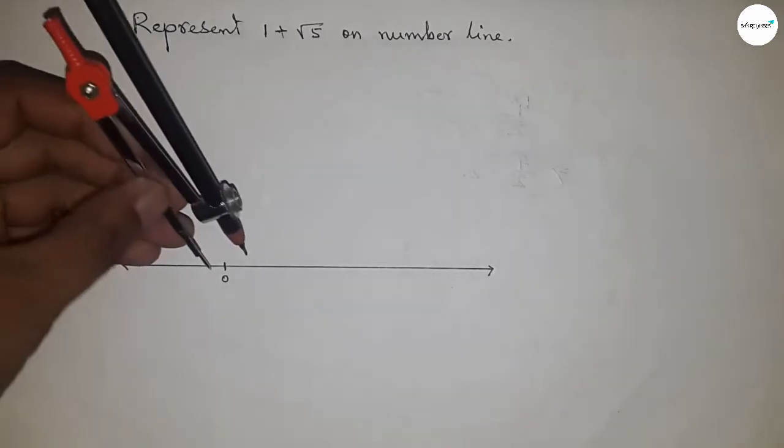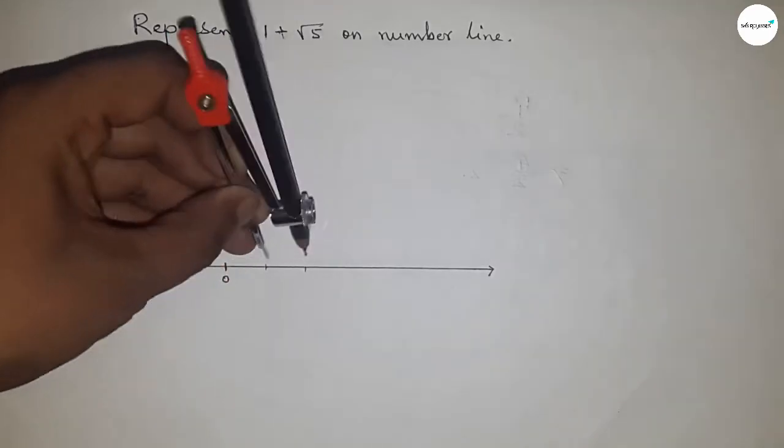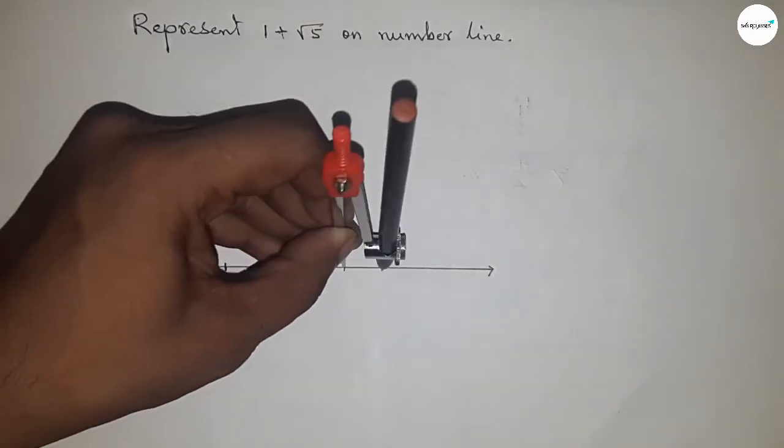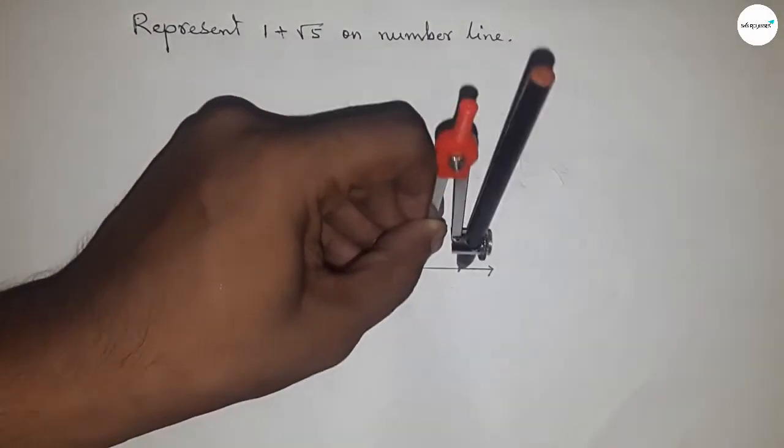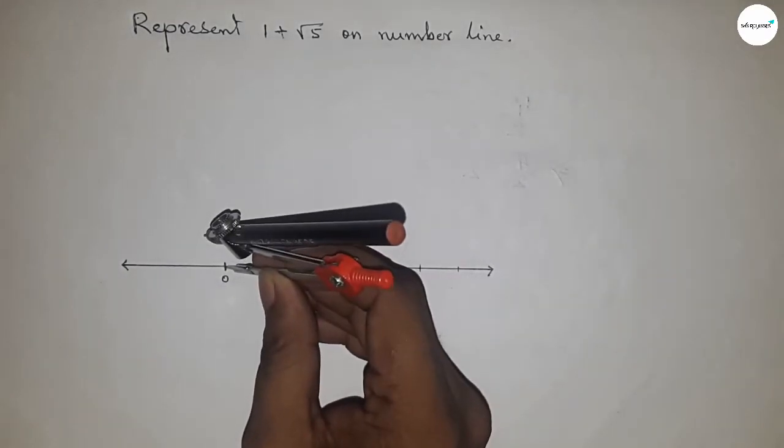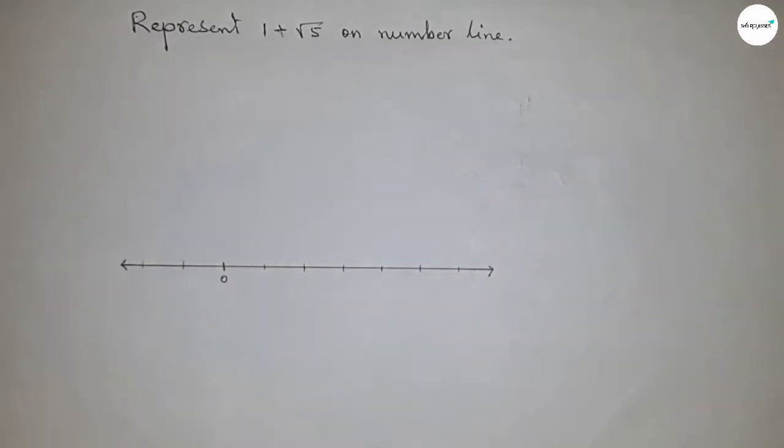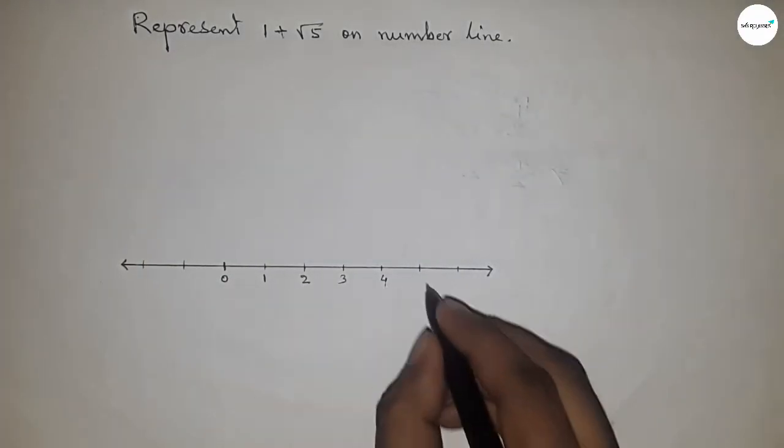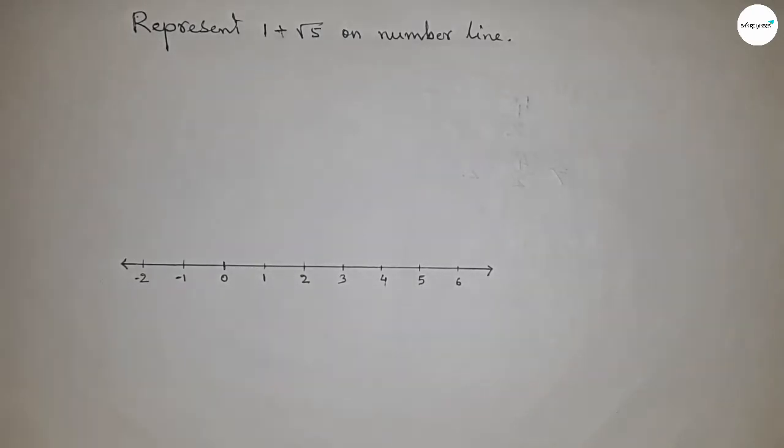Take any length with the compass and mark the lines this way to mark the numbers on the line. This is one unit length. Now this is 1, 2, 3, 4, 5, 6 and so on, and this side is minus 1, minus 2, and so on.